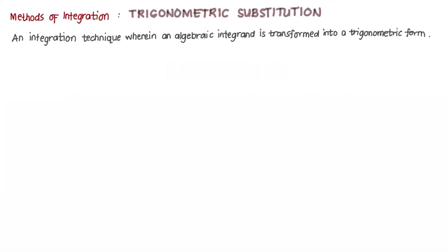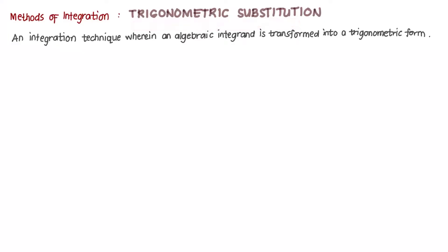In this video, we talk about one of the methods of integration called trigonometric substitution. It's an integration technique wherein an algebraic integrand is transformed into a trigonometric form. So we introduce a new variable to make this algebraic integrand trigonometric in form.